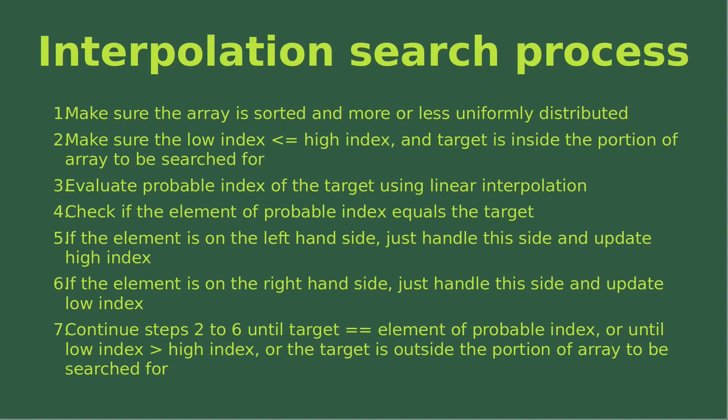Third, we have to evaluate the probable index of the target using the approach called linear interpolation. Fourth, we have to check if the element of the probable index is really equal to the target. If the element is on the left-hand side of the array, we just handle the left-hand side and update the high index accordingly. On the other hand, if the element is on the right-hand side of the array, we just handle the right-hand side and update the low index accordingly.